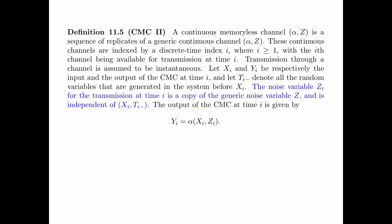We now give the second definition of a CMC. A continuous memoryless channel specified by the pair (alpha, z) is a sequence of replicates of a generic continuous channel (alpha, z). The noise variable z_i for the transmission at time i is a copy of the generic noise variable z and is independent of the pair (x_i, T_i⁻). The output of the CMC at time i is given by y_i = alpha(x_i, z_i). This is an illustration of CMC2.